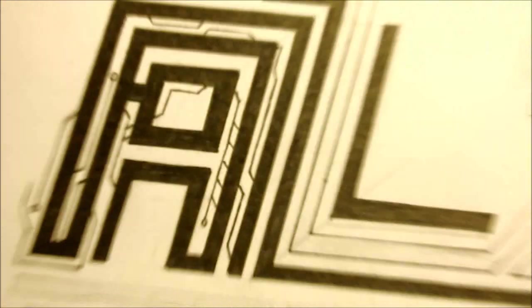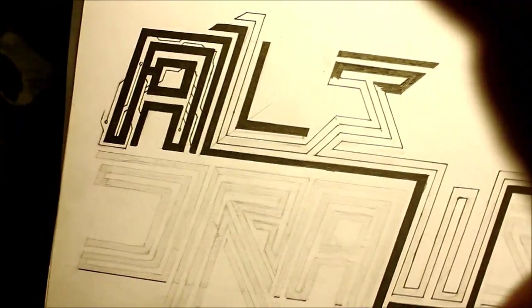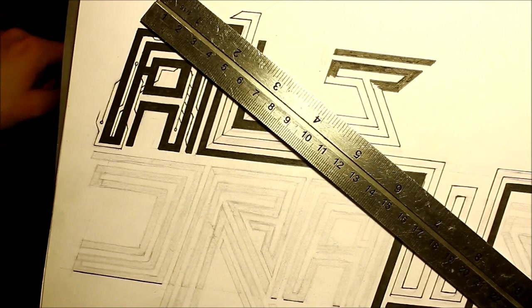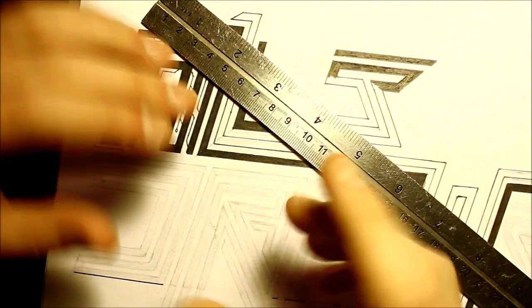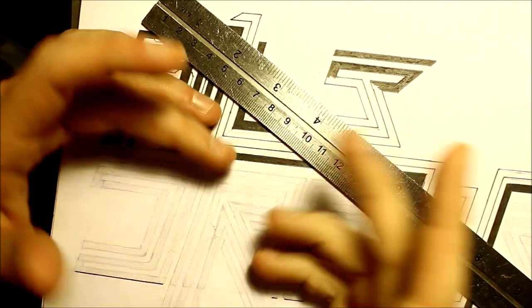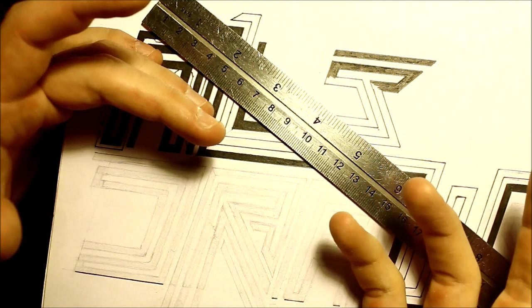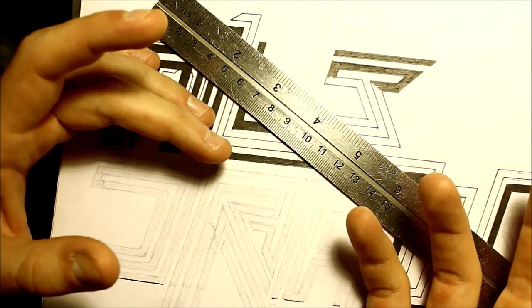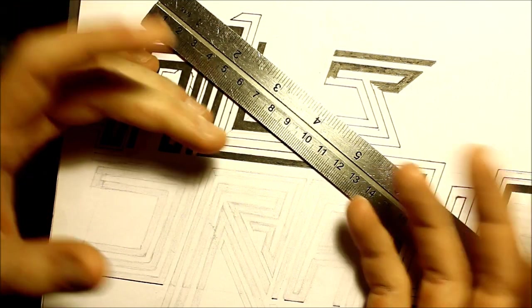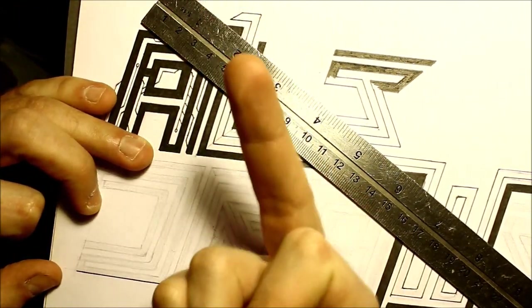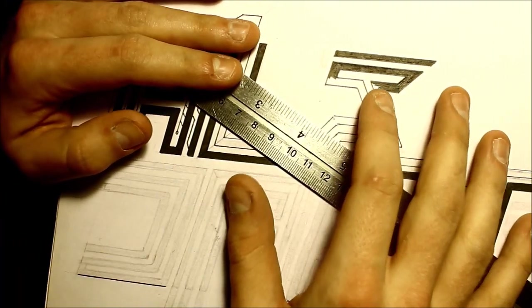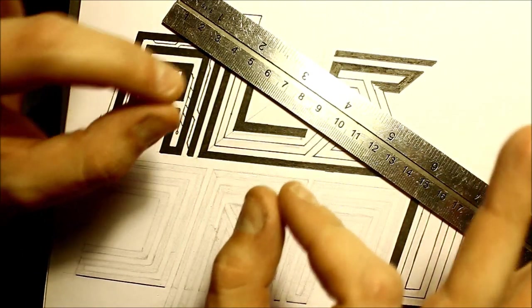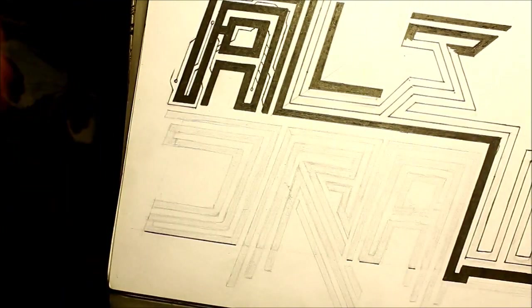My art teacher used to say to me that using a ruler was cheating. And I was an obtuse student to say the least, and I used to say to her, well miss, a guy doesn't play baseball with his hands, he uses a bat. And she said to me, well it isn't a competition Alex. And I said, well if it's not a competition then how can I cheat? So I don't think using a ruler is cheating. I think what you can achieve with tools, rulers, compasses, set squares, can just be really incredibly satisfying.